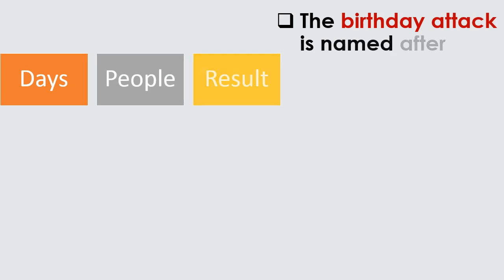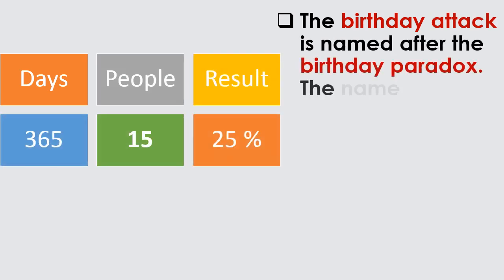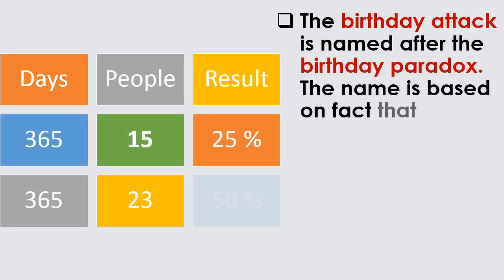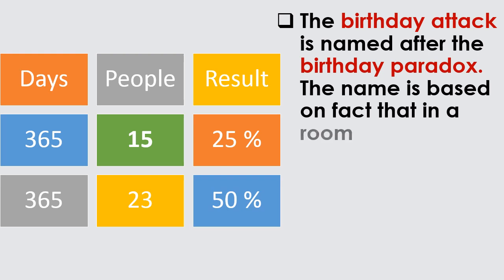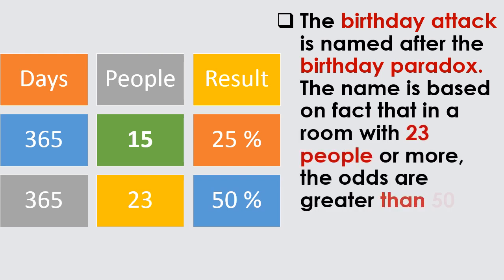The birthday attack is named after the birthday paradox. The name is based on the fact that in a room with 23 people or more, the odds are greater than 50% that two will share the same birthday.